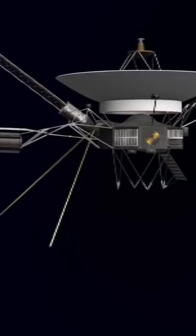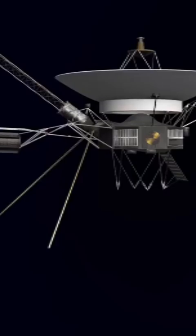The Saturn Encounter, 1980. After its Jupiter flyby, Voyager 1 used Saturn's gravity to set it on course out of the solar system.